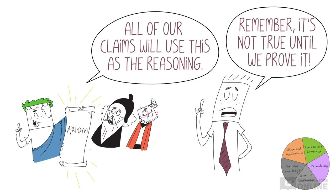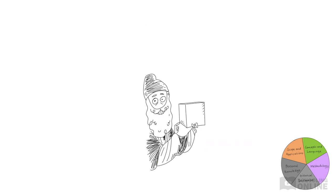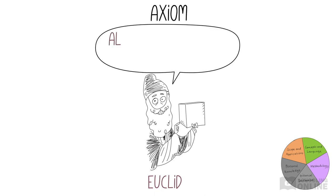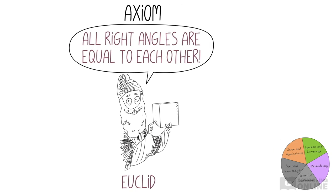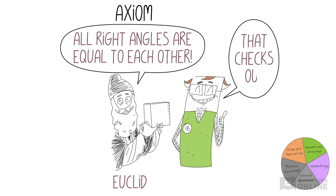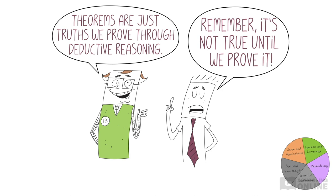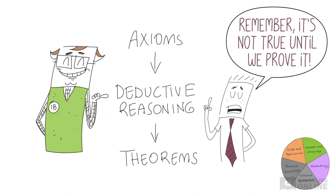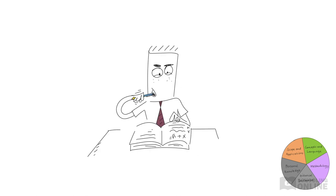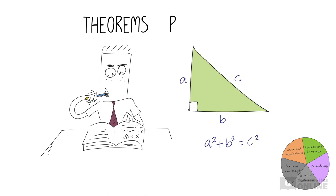But remember, a statement isn't actually true unless it has been proved. For example, the Greek mathematician Euclid came up with an axiom: all right angles are equal to each other. In general, mathematicians will accept this statement as true. Theorems are what mathematicians call truths that we prove via deductive processes. Don't forget, statements are only true once they've been proved. Mathematicians will begin with one or more axioms, use deductive reasoning, and derive knowledge in the form of theorems. Maybe you've studied some theorems in maths class, like Pythagoras' theorem.